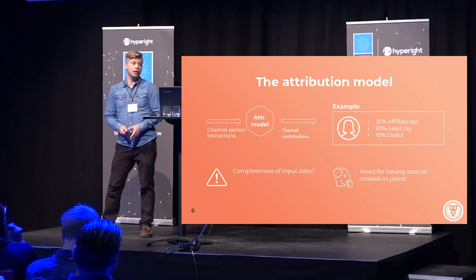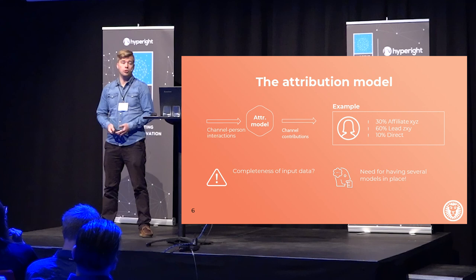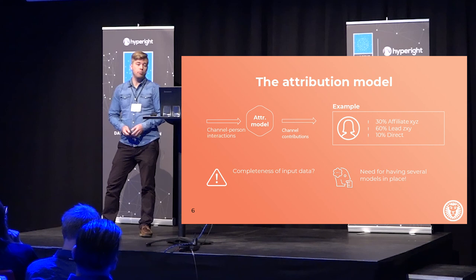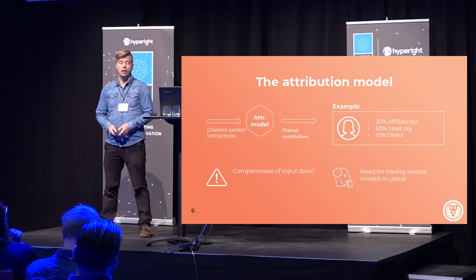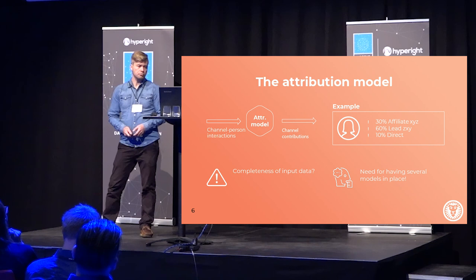More generally, we have channel-person interactions going into an attribution model, and out of this we get channel contributions. In this example, the model tells us that 30% comes from some affiliate, 60% is lead generation, and 10% is the customer coming directly to our service.